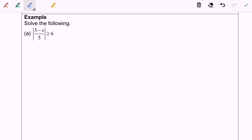Hello everyone, so now I'm going to solve the following question: the modulus of 3 minus x over 5, which is greater than or equal to 6. So based on the definition, this question will be 3 minus x over 5 greater than or equal to 6, or 3 minus x over 5 less than or equal to negative 6.